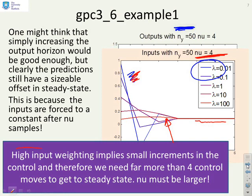So a high input weighting implies small increments in the control, and therefore, here's the key thing, we might need far more than four control moves to get to the steady state of the input that we want.